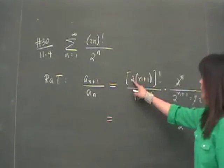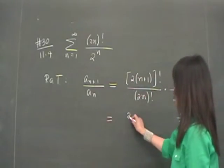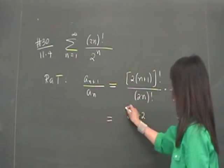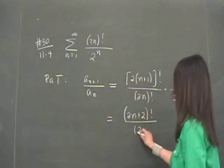Now what is the meaning of this? 2 times the quantity n plus 1 is the same as 2n plus 2 factorial over 2n factorial. Now do you remember what factorial means?